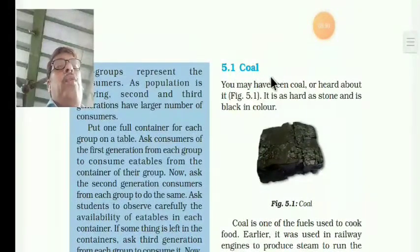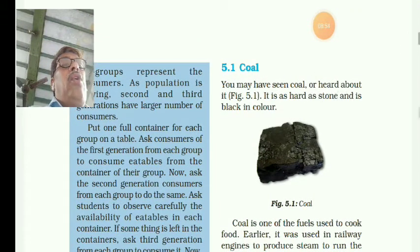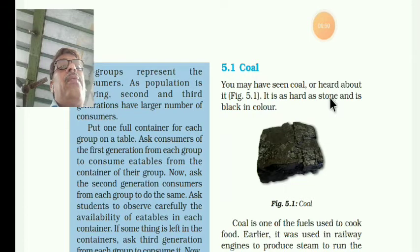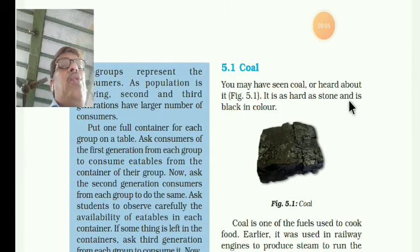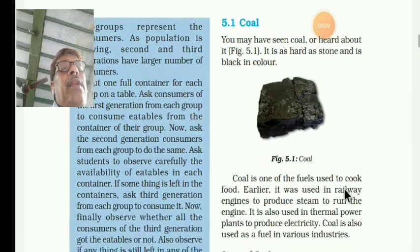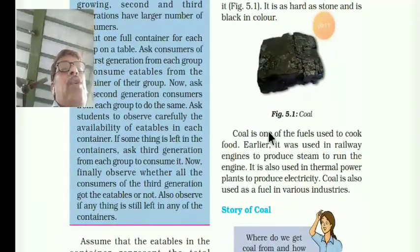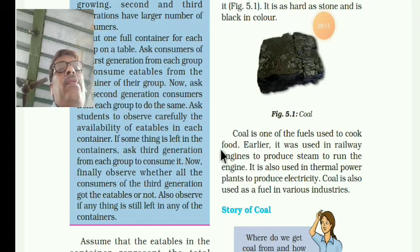Now we will see about coal. Coal is an exhaustible resource. Coal is a hard substance, hard stone and black in colour. Coal is one of the fuels — it is used as a fuel to cook food.